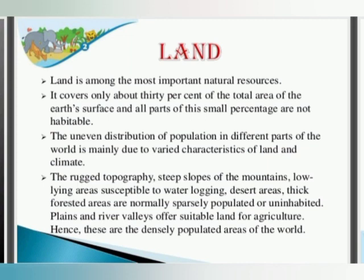Rugged topography, steep slopes of the mountains, and low-lying areas susceptible to waterlogging, as well as desert areas and thick forests, are sparsely populated and uninhabited. Plains and river valleys offer suitable land for agriculture, and hence they are the densely populated areas of the world.